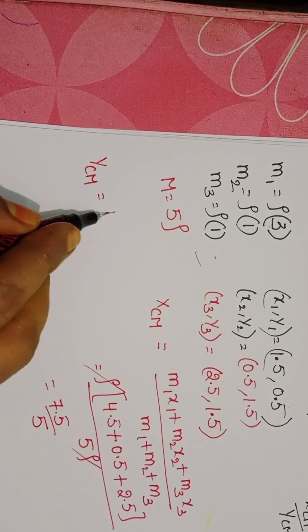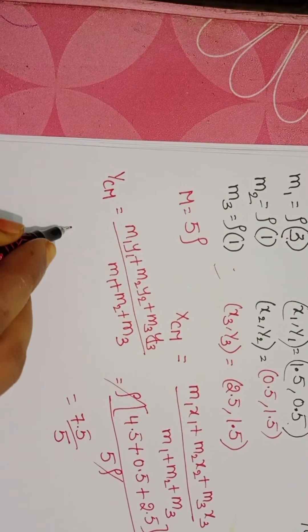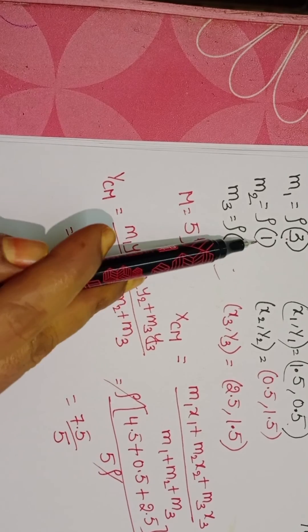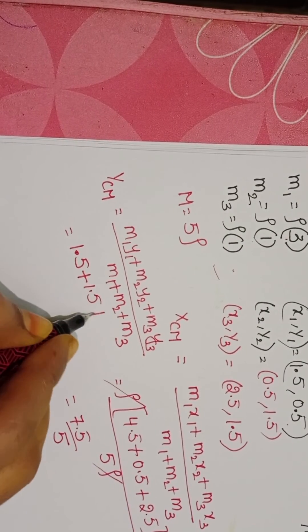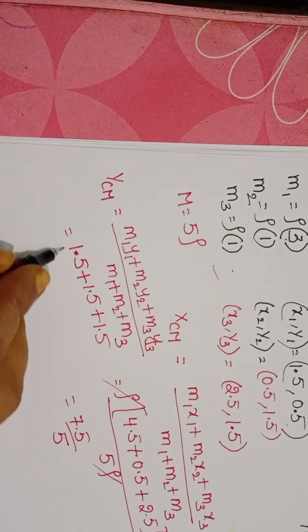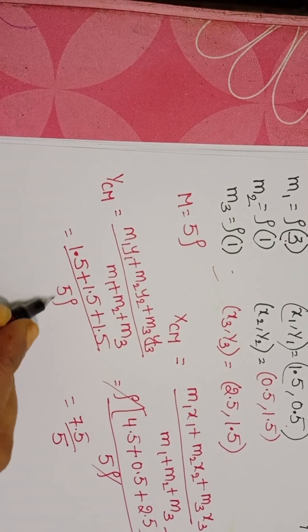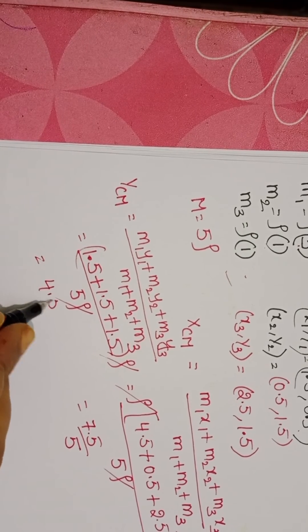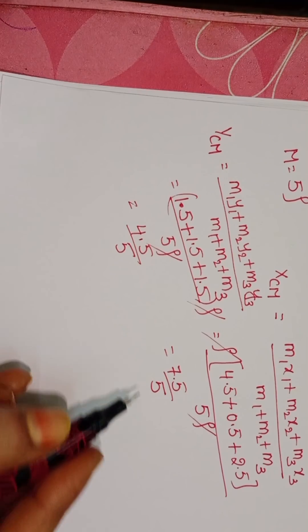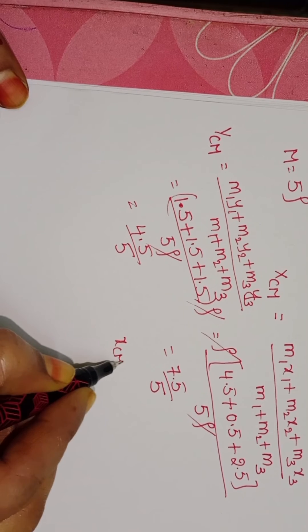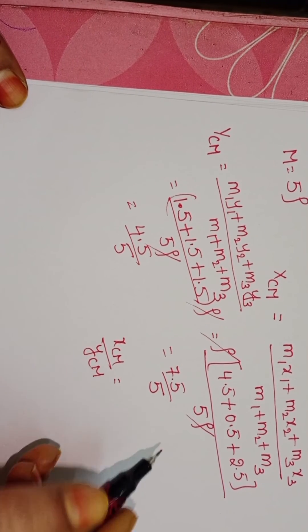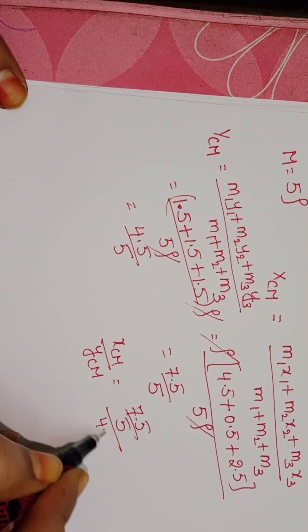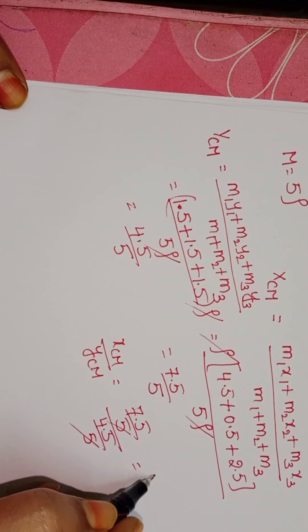Rho, rho get cancelled. 4.5 by 5. Take the ratio of position of the center of masses. 7.5 by 5 by 4.5 by 5. 5, 5 get cancelled.